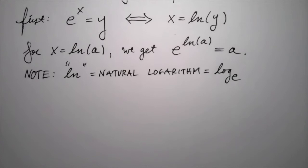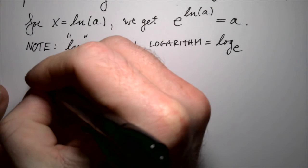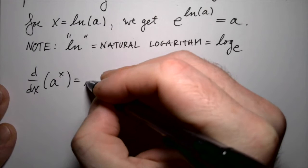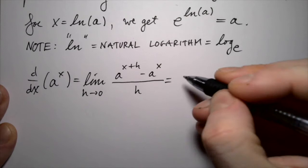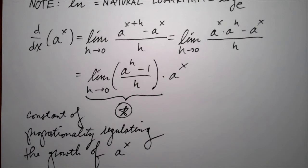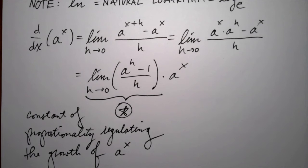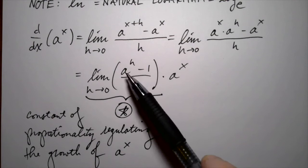Now that we've recalled all that, let's compute the derivative of a to the x using the definition in terms of the limit. The first part of the calculation is exactly the same as for e to the x. We see that the derivative of an exponential function is some constant — defined in terms of a limit — times the exponential function itself. That constant of proportionality looks just like the formula we had for e, but instead of e we have this other number a.